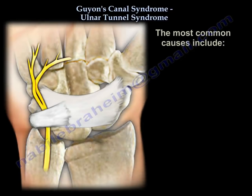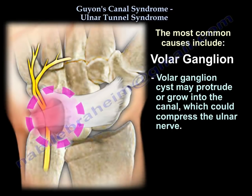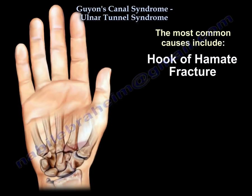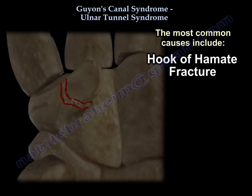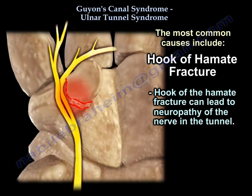The most common causes of ulnar nerve compression in Guyon's Canal include volar ganglia — a cyst may protrude or grow into the canal and compress the ulnar nerve. Hook of the hamate fracture can also lead to neuropathy of the nerve in the tunnel.